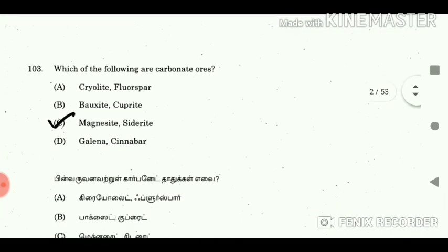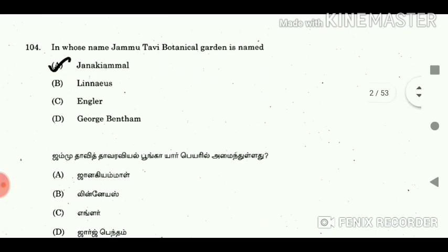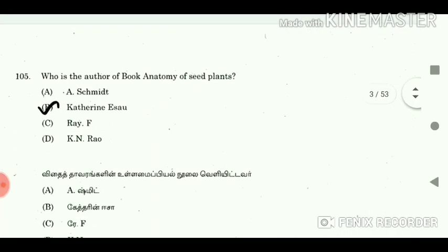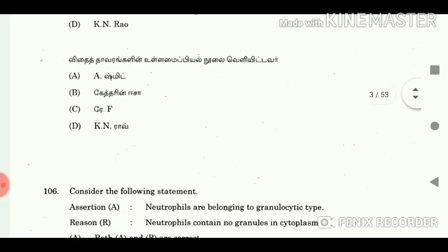Question 103: Which of the following are carbonate ores? Answer: Magnesite, Siderite. Question 104: Jammu Tavi Botanical Garden is named in whose name? Answer: Janaki Amal. Question 105: Who is the author of the book Anatomy of Seed Plants? Answer: Katherine Esau.